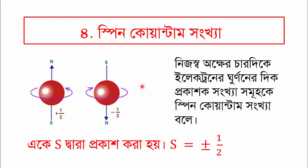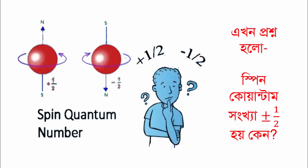When an electron spins in one direction, it is plus half (+1/2), and when it spins in the other direction, it is minus half (-1/2). That means the first orbital has two electrons — the first electron is plus half and the second electron is minus half.